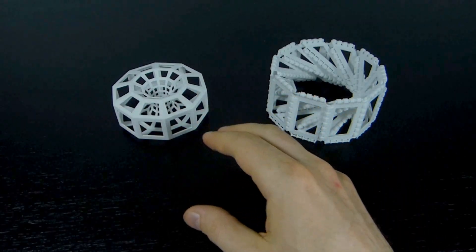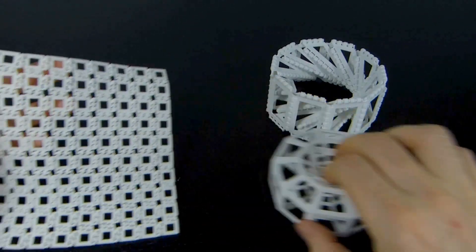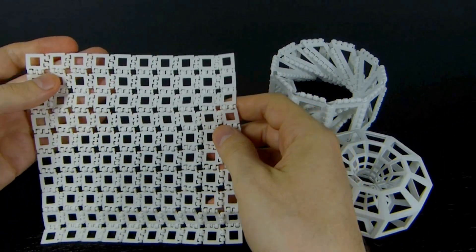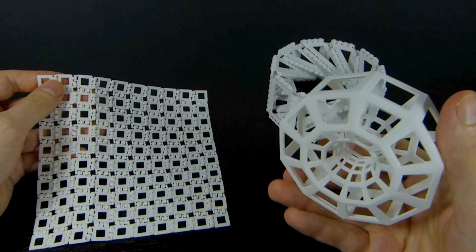So you can think of this particular torus as really being a 10 by 10 grid of squares.